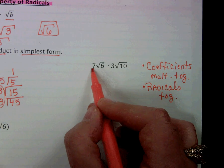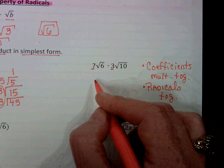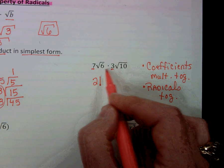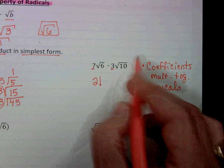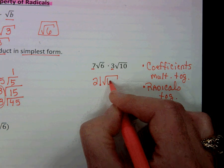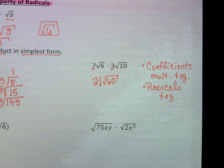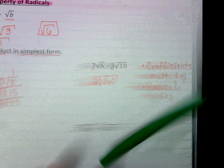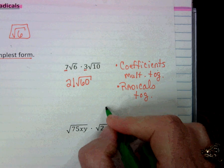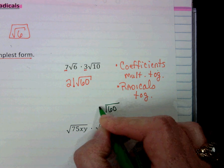So here we're going to do 7 times 3 is 21. And then the square root of 6 times the square root of 10 is the square root of 60. Now I'm pretty sure that the square root of 60 is not simplified, so now I'm going to birthday cake the 60.